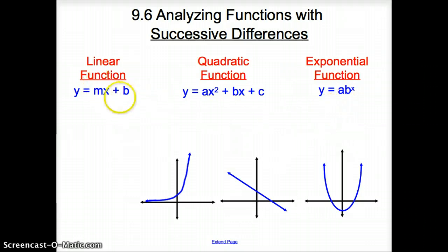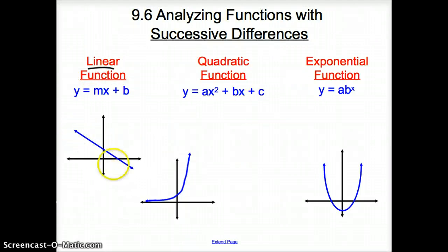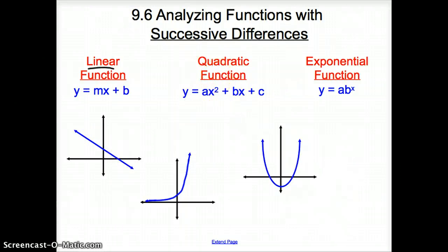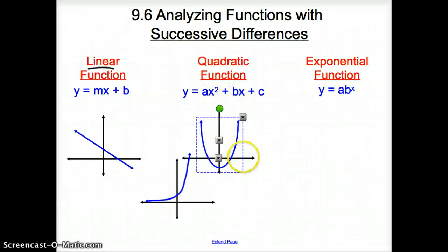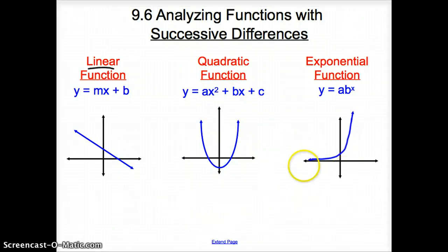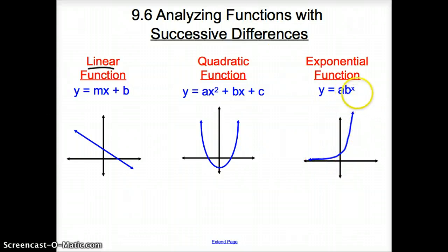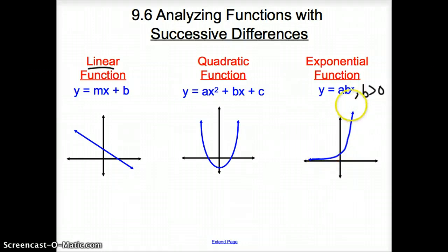Now, what does the linear function look like? The graph of the line is the blue line right here. The quadratic function makes a U shape — it is a parabola. And then finally, the exponential function starts off small and gets really big. With this exponential function, b is greater than 0, and it's going to get big really fast.